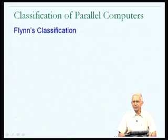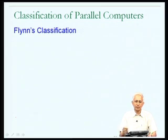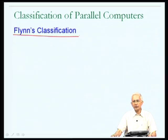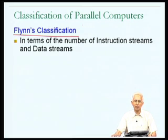There are different kinds of parallel computers, so before we start talking about programming them, it is good to get some idea about how they are classified. One popular classification of parallel computers is known as Flynn's classification. Flynn's classification distinguishes between different kinds of parallel computers by characterizing any one parallel computer in terms of the number of instruction streams and the number of data streams present when a program is in execution.